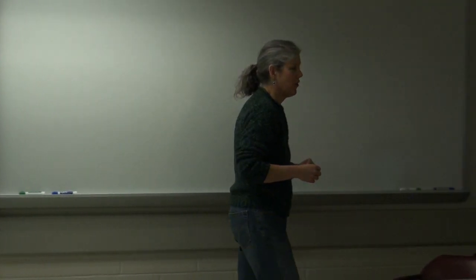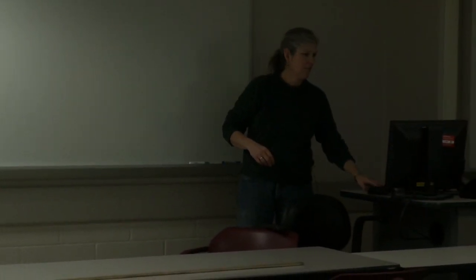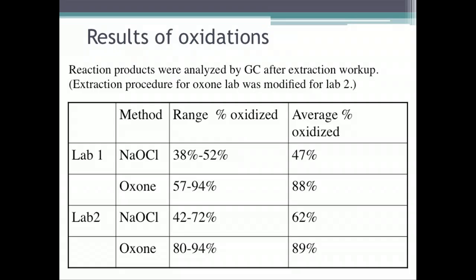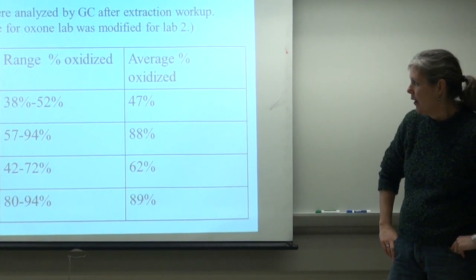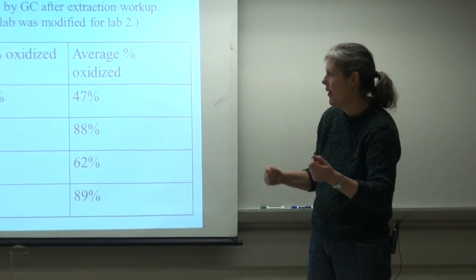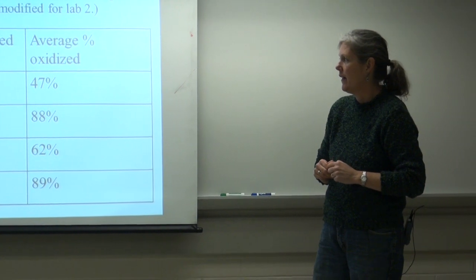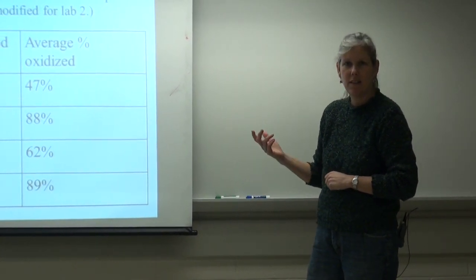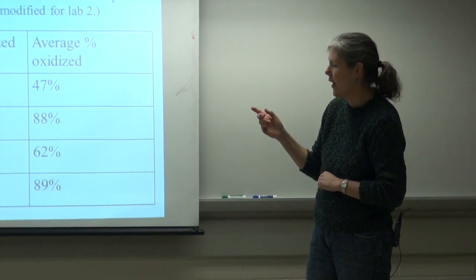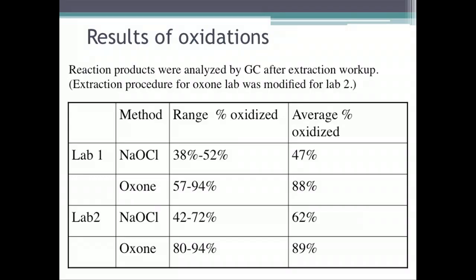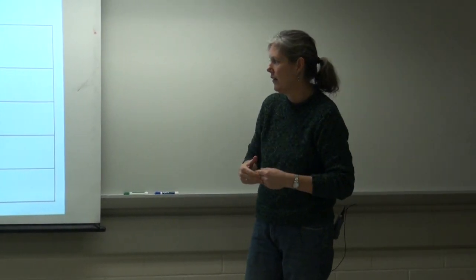My students had a little trouble between sections, so I modified the workup procedure of the oxone reaction. In the first lab, the students that ran the bleach/acetic acid oxidation had about 40–50% of their alcohol oxidized. The students that ran the oxone reaction got anywhere between 50% and 90% oxidized, averaging close to 90% oxidation. We analyzed this by GC, and the oxone had better success in converting the alcohol to the ketone.